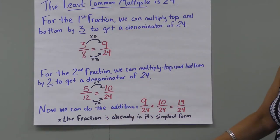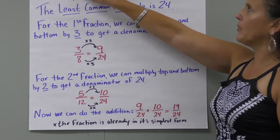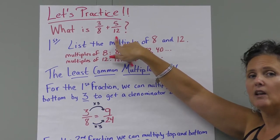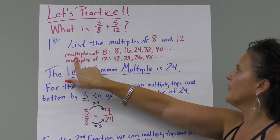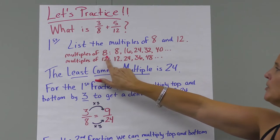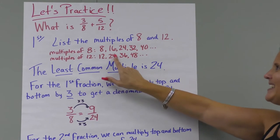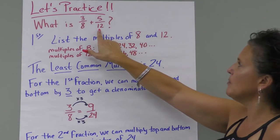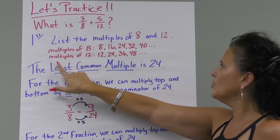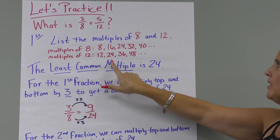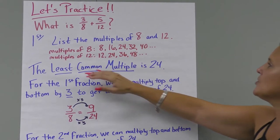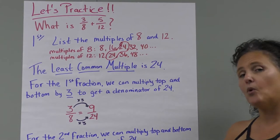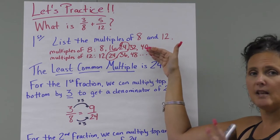Let's do a little practice. We want to add three-eighths plus five-twelfths. First, we list the multiples. Multiples of eight: eight, 16, 24, 32, 40, and on. Then multiples of 12: 12, 24, 36, 48. Our least common multiple is 24 — it's the lowest number in both sets that matches.